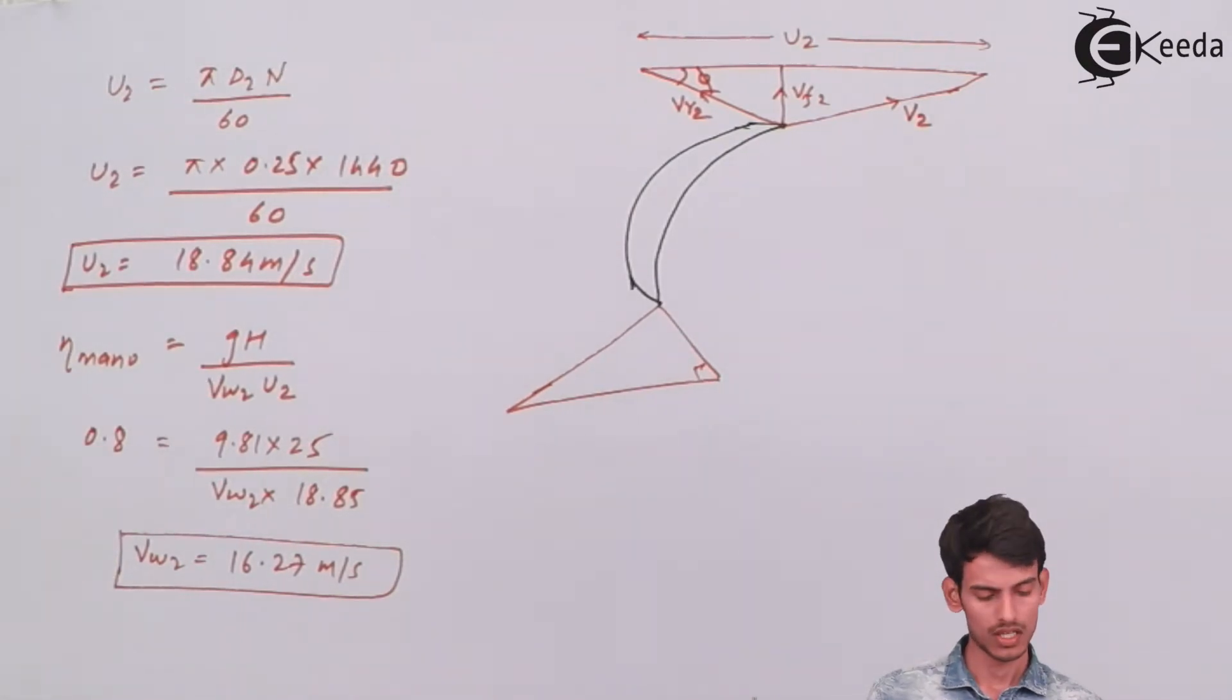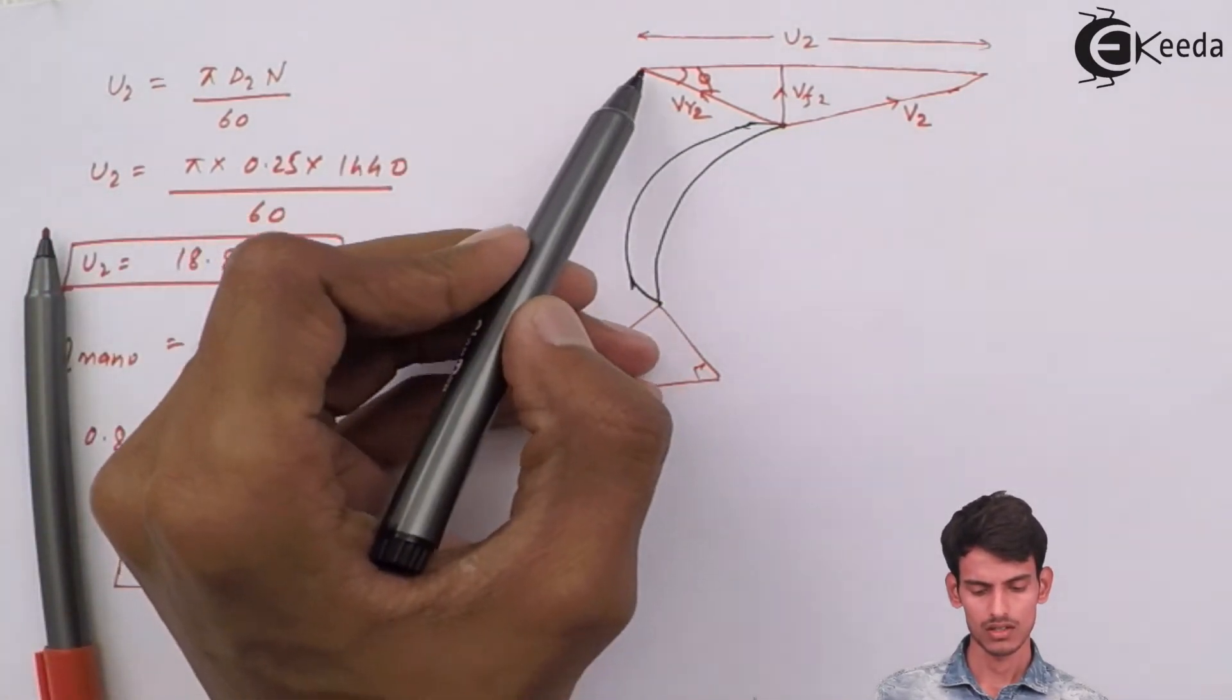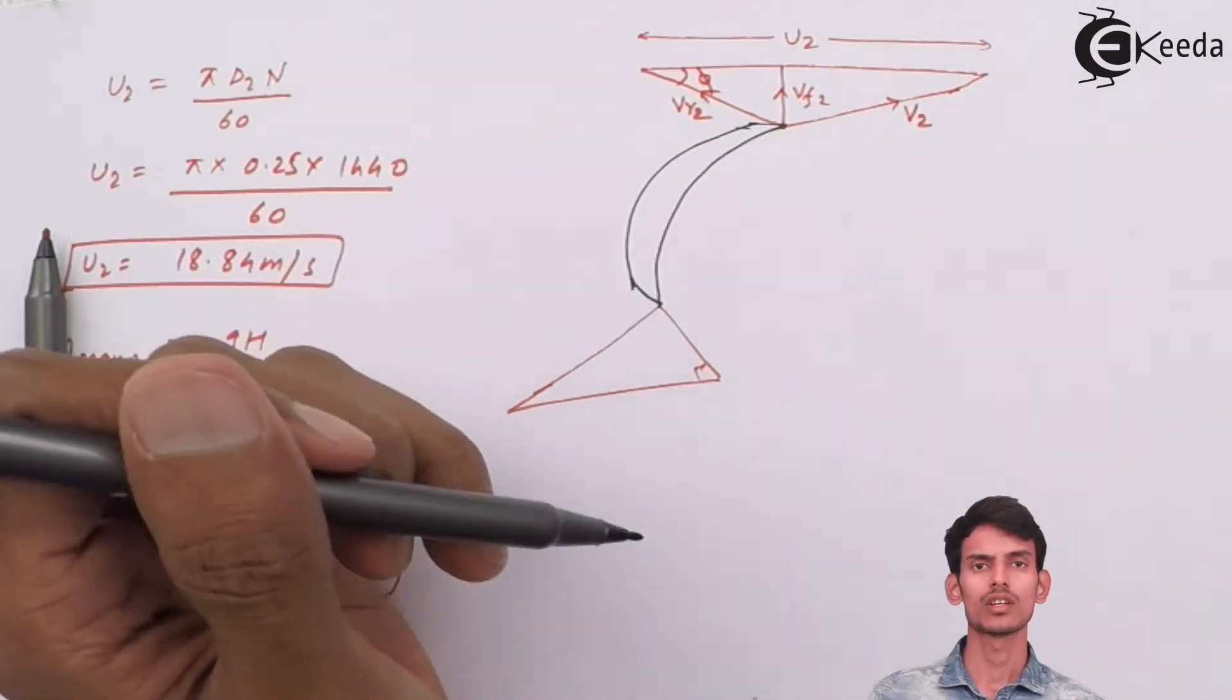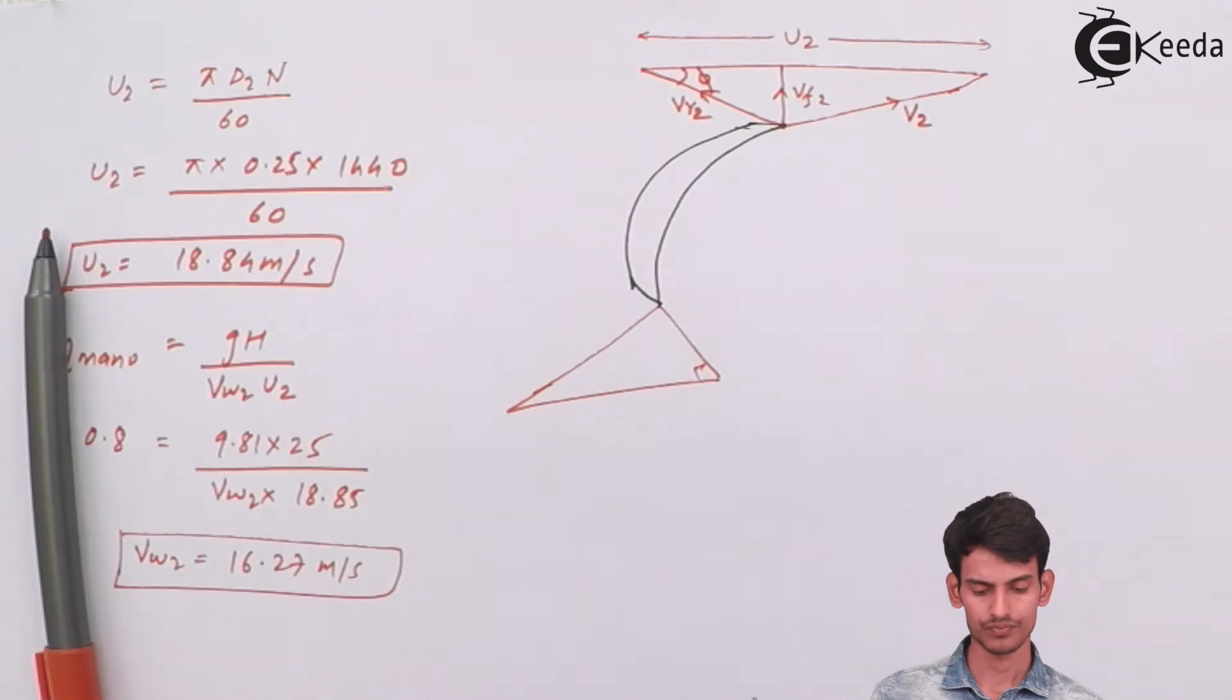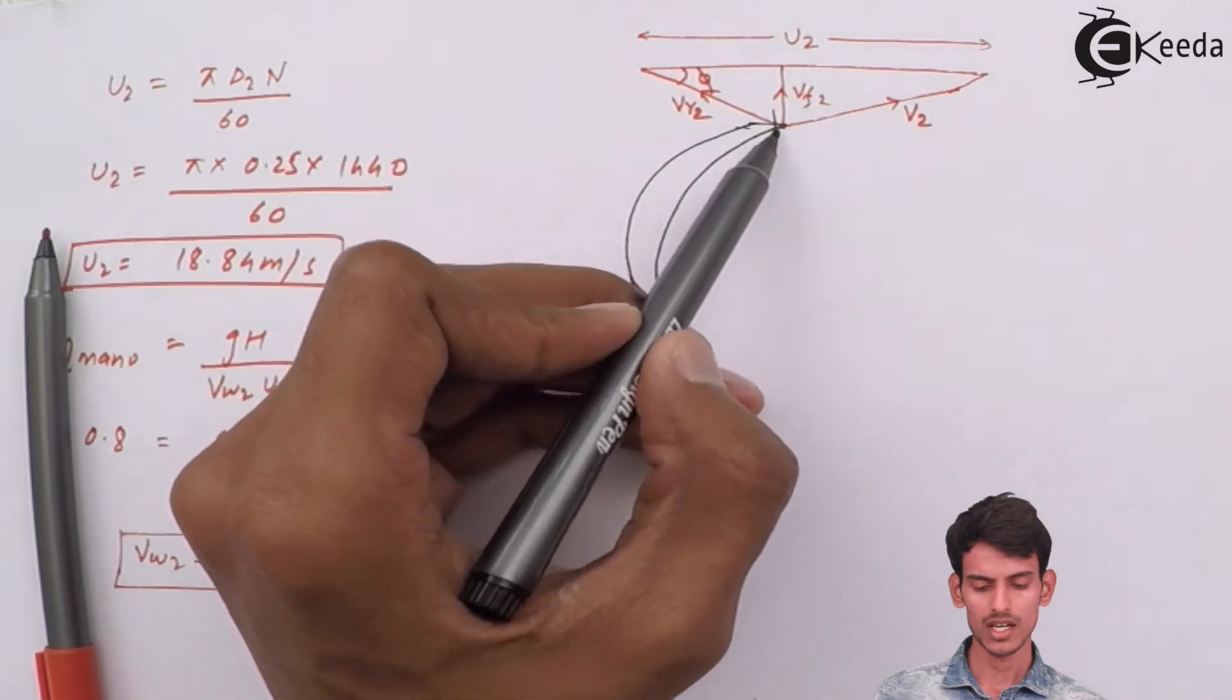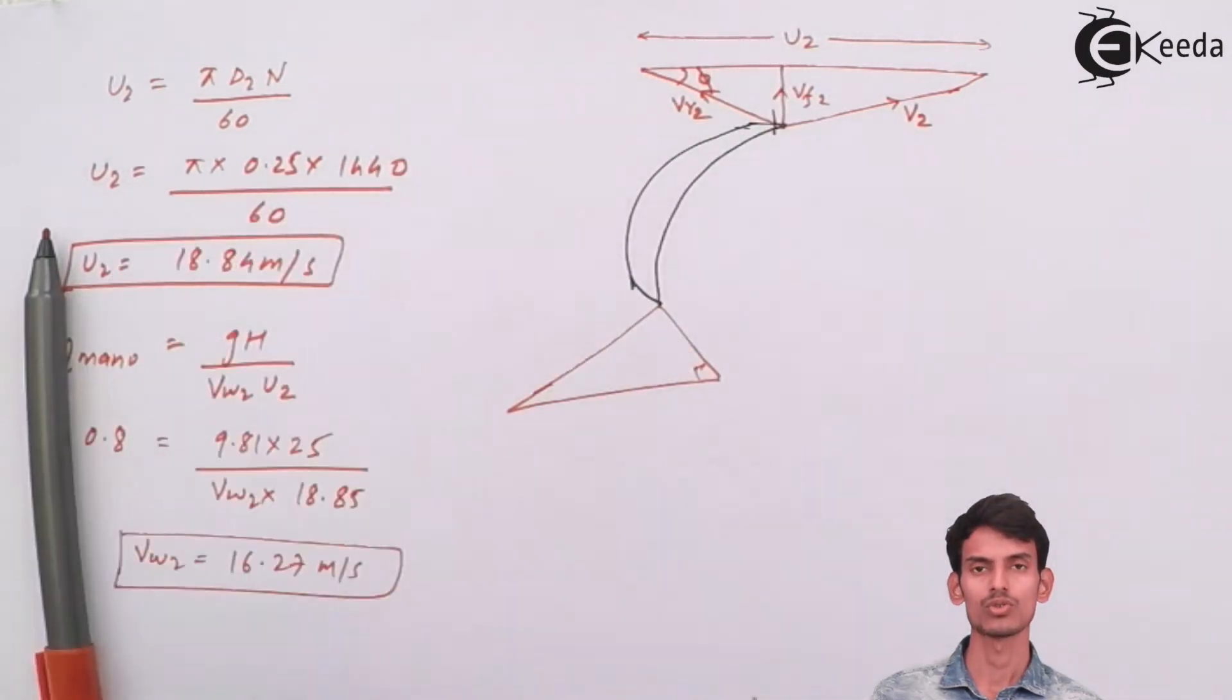The value of Vw2 is known. Now we can move on to this triangle having angle phi. In this triangle, if you use tan, you can get the value. The unknown can be easily found because tan phi - the opposite side is Vf2 and the adjacent side is known to you.